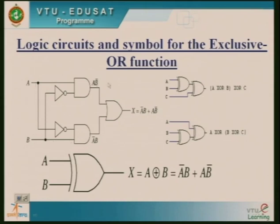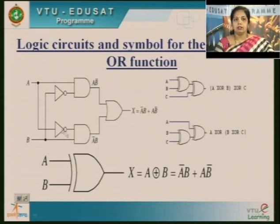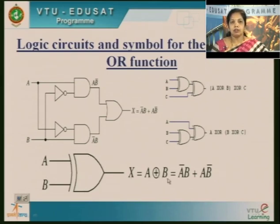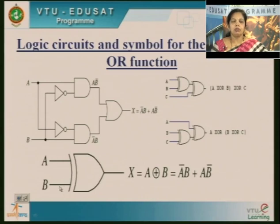This is the logic circuit for the XOR gate. In general, the basic symbol of XOR gate has inputs A and B. This XOR symbol represents the XOR operation, written as A XOR B, and this is the equation. We call this a two-input XOR gate.